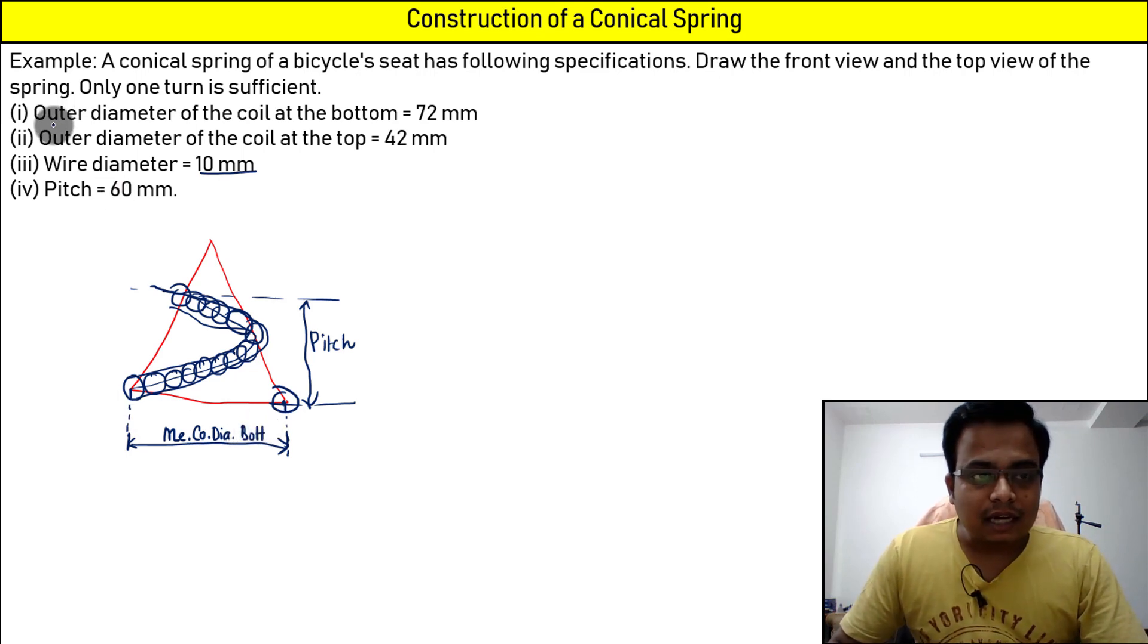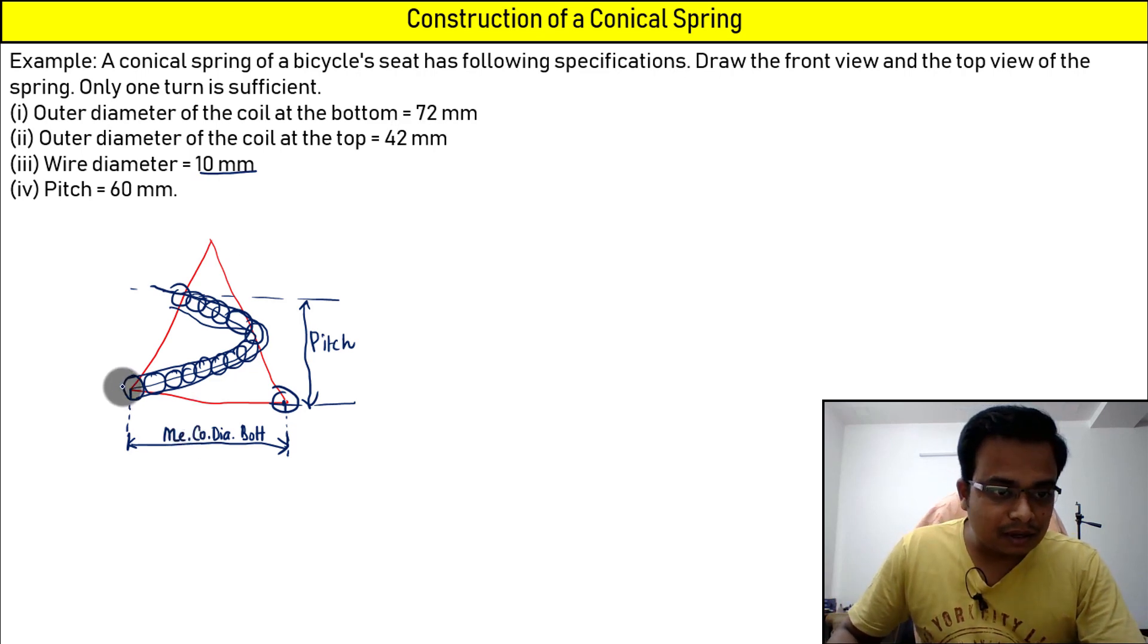One more thing: outer coil diameter is 72 millimeters. That means from here until you reach here, this is the outer coil diameter. The outer at bottom is equal to 72 millimeters.